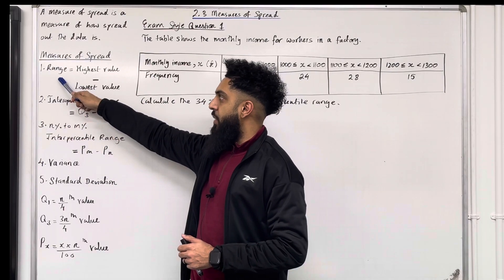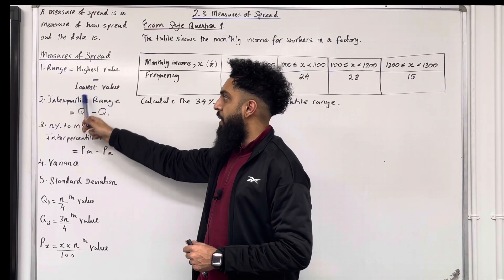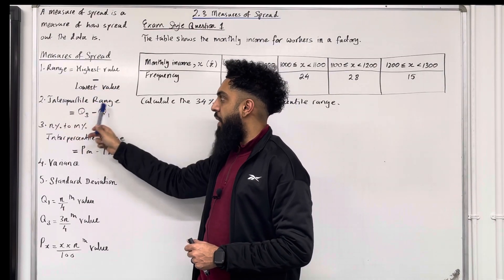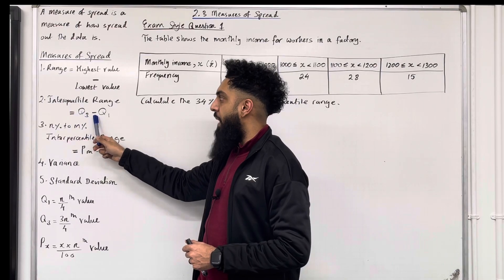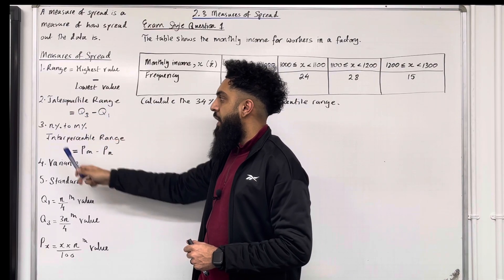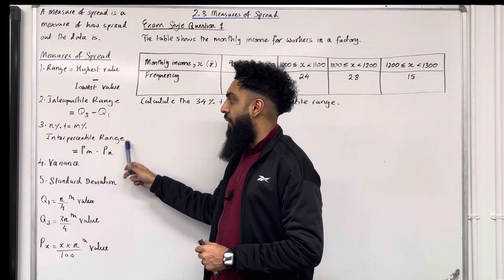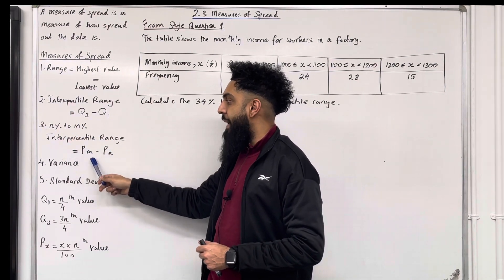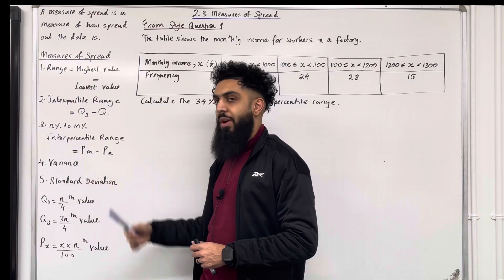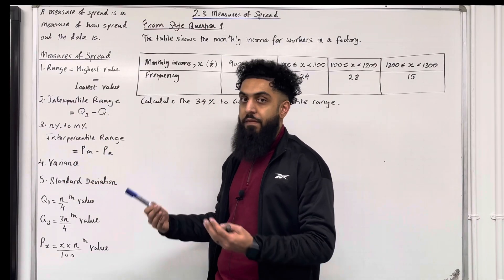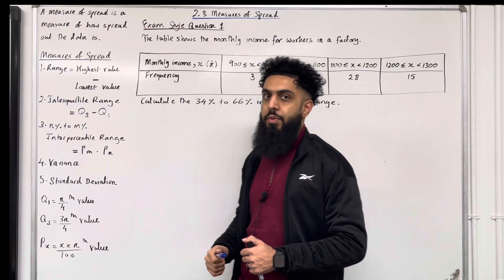Number one: the range, which is equal to the highest value minus the lowest value. Number two: the interquartile range, which is equal to the upper quartile minus the lower quartile. Number three: the n percent to m percent interpercentile range, which is equal to Pm minus Pn. Number four: the variance, and number five: the standard deviation — we're going to look at both of these in 2.4.